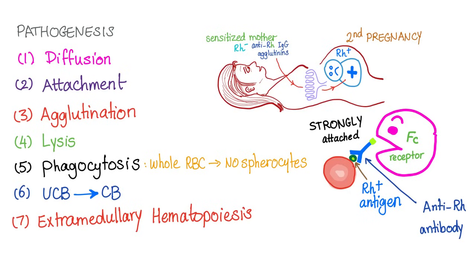Hemolysis will occur. The macrophage consumes the entire red blood cell, so there are no spherocytes. Unconjugated bilirubin through macrophages can be converted into conjugated bilirubin. Then extra-medullary hematopoiesis will occur because the bone marrow is overwhelmed — other organs will work very hard. Now you can have hepatosplenomegaly.